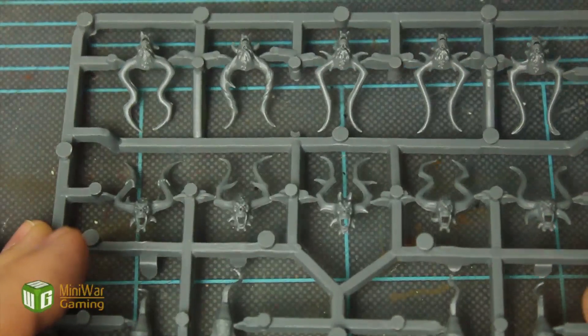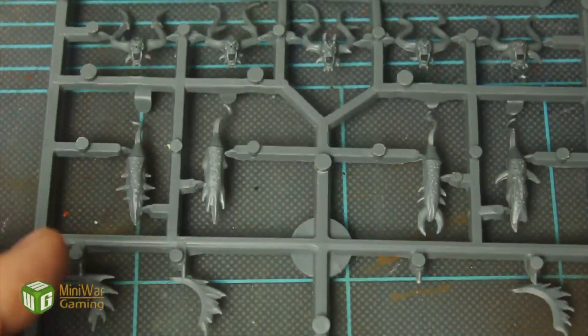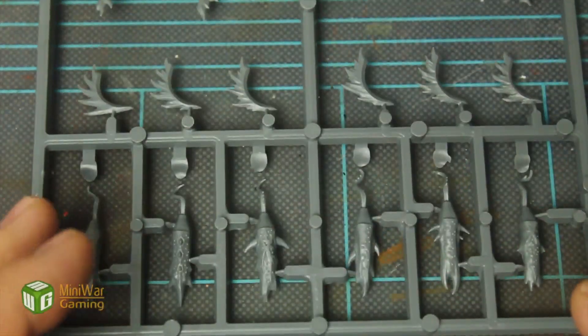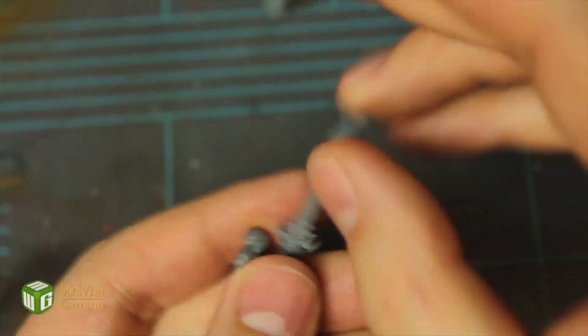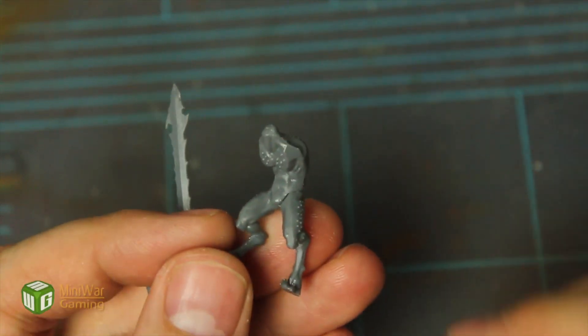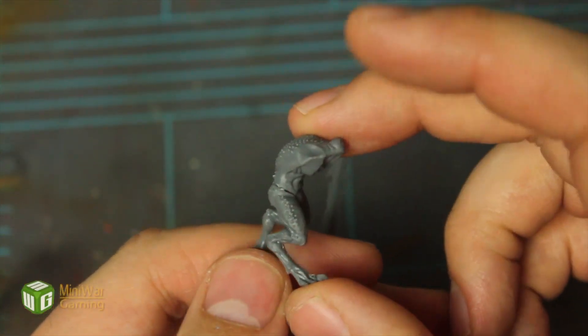Today we are going to work on a special project. We're going to be taking one of the Bloodletters of Khorne and converting it to follow one of the other Chaos Gods. This first one we're going to be focusing on Slaanesh, the God of Excess.